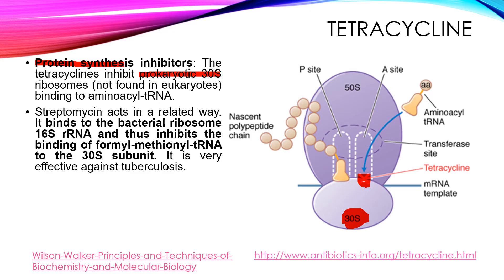Similarly, streptomycin also inhibits peptide synthesis by binding to 16S rRNA. 16S rRNA is the part of the 30S subunit of the ribosome, and hence restricts the binding of incoming formylmethionyl tRNA to the 30S subunit. Formylmethionyl tRNA is the initiator tRNA in prokaryotes.